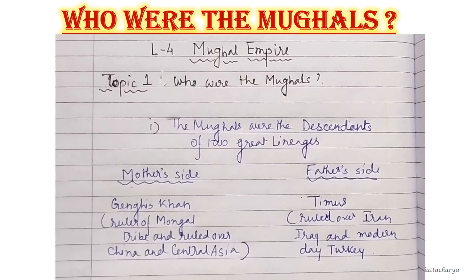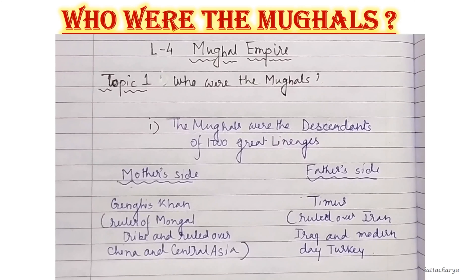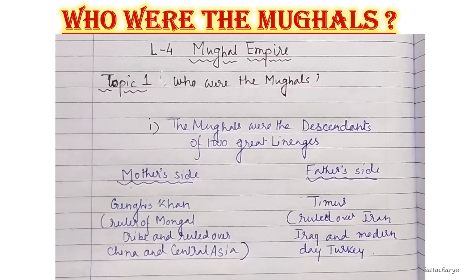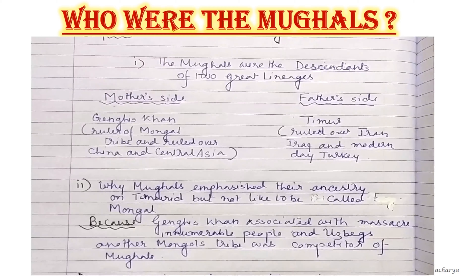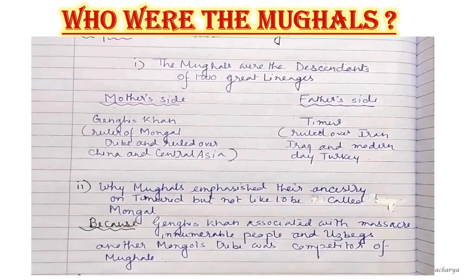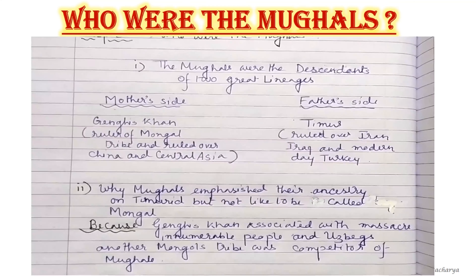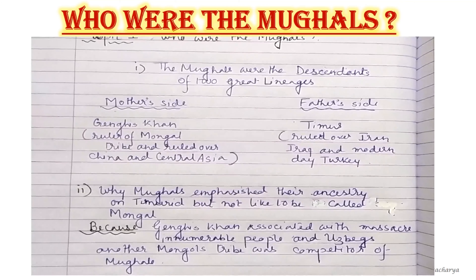The Mughals were descendants of two great lineages. On the mother's side it was Chengiz Khan, and on the father's side it was Taimur. Chengiz Khan was the ruler of the Mongol tribe and ruled over China and Central Asia. Taimur ruled over Iran, Iraq, and modern-day Turkey. However, the Mughals emphasized their ancestry on the Timurid side and did not like to be called Mongols. Ancestry means forefathers.